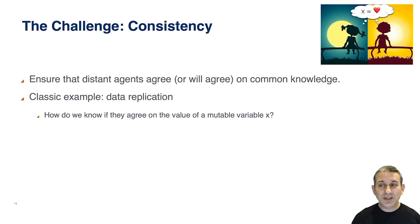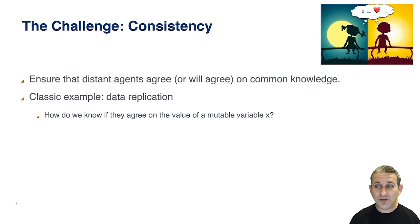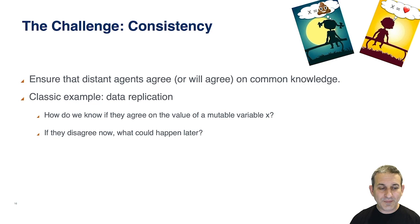The goal with consistency is to ensure that distant agents agree — or at least eventually will agree — on common knowledge. In this case, they both agree on the value of a variable x, which is currently 'love.' But if x is mutable, an update on one side that the other side hasn't seen means one still believes 'love' while the truth on the other side is something different. If they don't agree on x, imagine all the other things they won't agree on until they can communicate again. This idea of computations running independently and disagreeing on variables is sometimes called the split-brain problem.